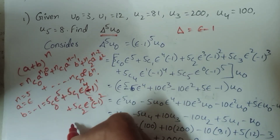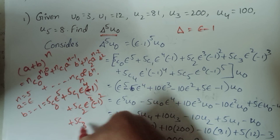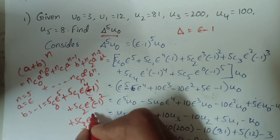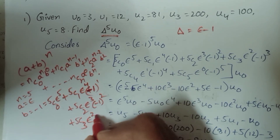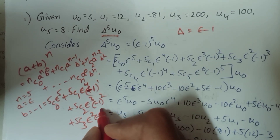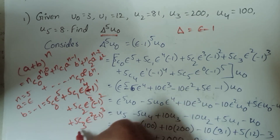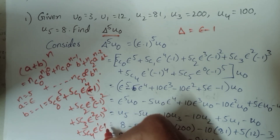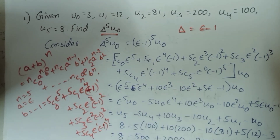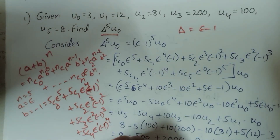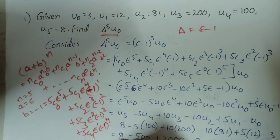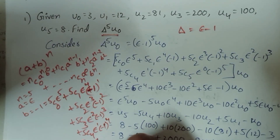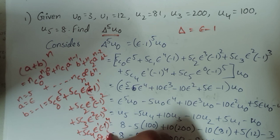Next place: 5C3 times e power (5 minus 3) equals e power 2, times (minus 1) power 3. Then 5C4 times e power (5 minus 4) equals e power 1, times (minus 1) power 4. Next: 5C5 times e power 0 times (minus 1) power 5.